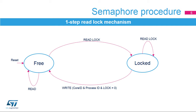A locked semaphore can only be unlocked by writing the lock bit to 0 with the corresponding core ID and process ID. The two-step and one-step lock procedures can be used concurrently. In this case, the two-step lock procedure must not use process ID value 0x0000.